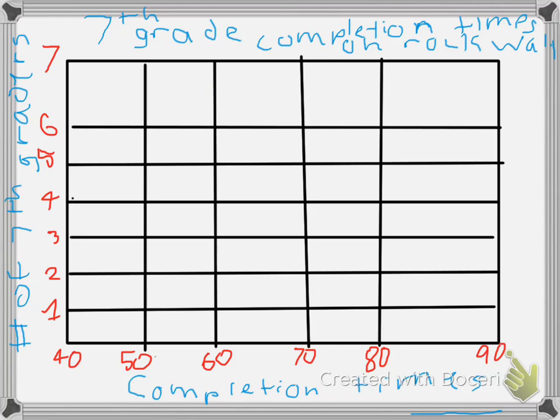Once you have the table ready, you start on the histogram. First, you make a title and label the axes. The title for this histogram is 7th grade completion time on rock wall.